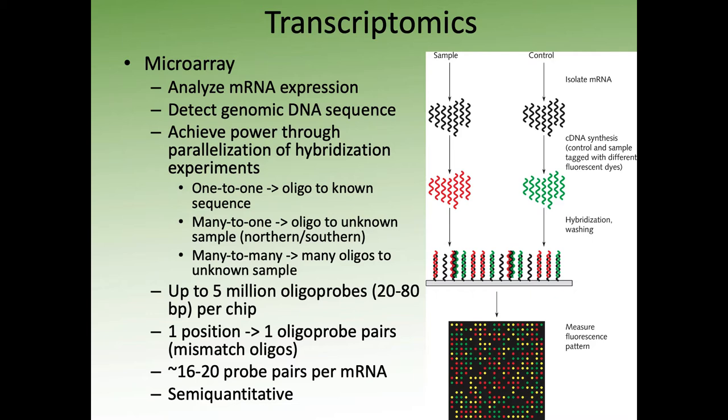In a typical microarray experiment, you have your sample and your control from which you isolate mRNA, and then you tag each sample with a fluorescent dye — either red or green. You wash your samples across your chip and hybridize them to the oligos. If you have a lot of green at one site it will bind to that probe; if you have a lot of red, it'll bind to those probes; and if you have a lot of both, they'll cancel each other out. You end up with a fluorescence pattern where yellow means expression in both tissues, black means no expression, green means expression in your control, and red means expression in your sample — allowing you to see patterns of up-regulation and down-regulation.